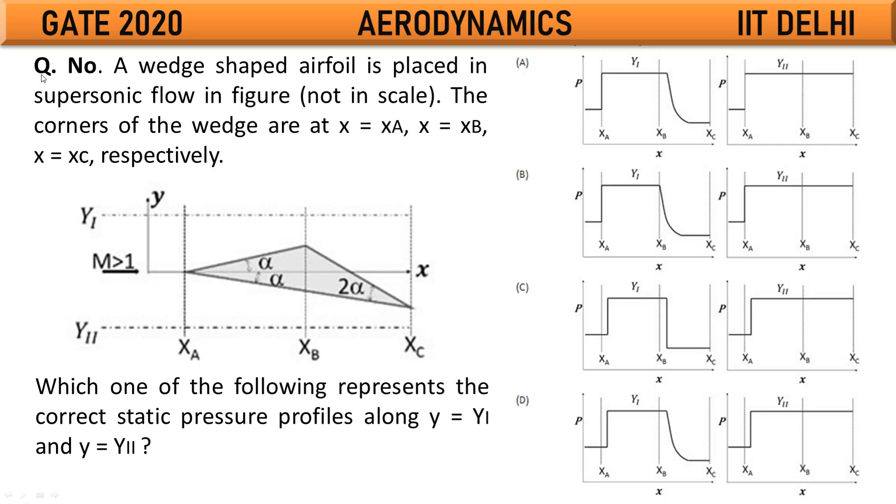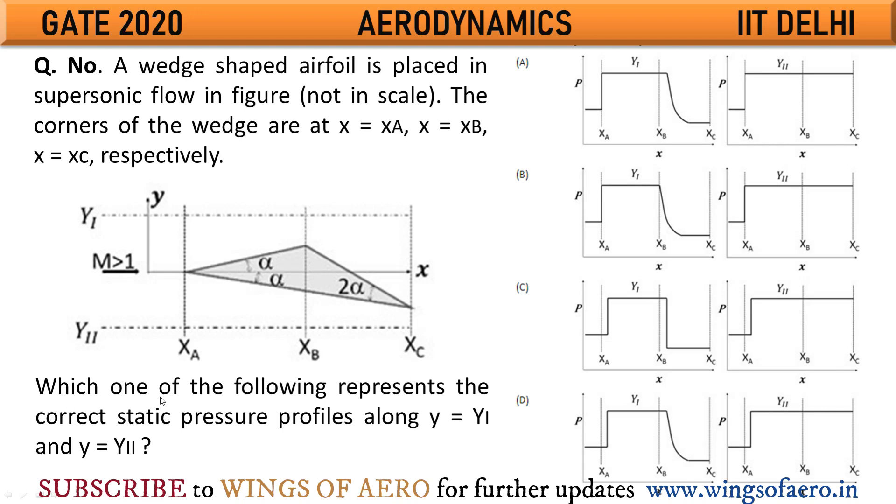First question: A wedge shaped airfoil is placed in supersonic flow in figure, not to scale. The corners of the wedge are at XA, XB and XC respectively. Which of the following represents the correct static pressure profile along Y1 and Y2? These are the four options.